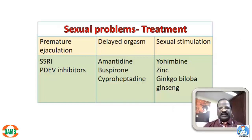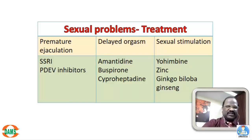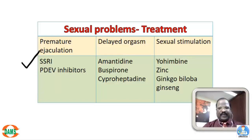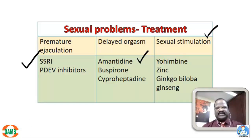Sexual problems include premature ejaculation, delayed orgasm, and poor sexual interest. For premature ejaculation, the best options are SSRIs along with supportive PDE5 blockers. For delayed ejaculation, drugs like amantadine, buspirone, or cyproheptadine can promote ejaculation. To create sexual interest, yohimbine (an alpha-2 antagonist), zinc, and herbal medicines like ginkgo biloba and ginseng are used as sexual stimulants.